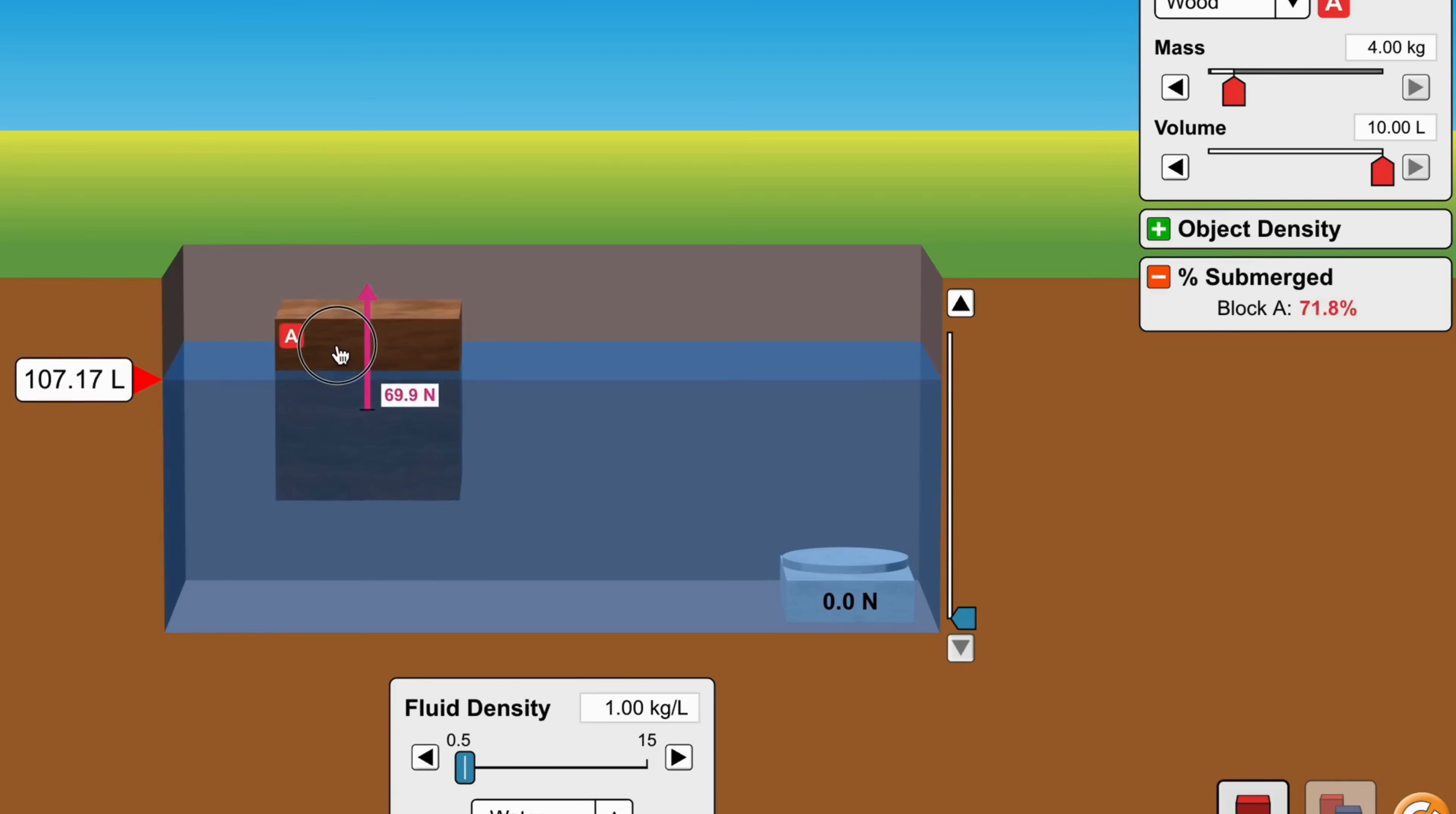Now as the cube is pushed further down, a larger part gets submerged, more fluid is displaced, and the buoyant force increases. When the cube is completely submerged, then and only then the displaced volume becomes equal to the total volume of the object, and at that point buoyant force does not increase further.